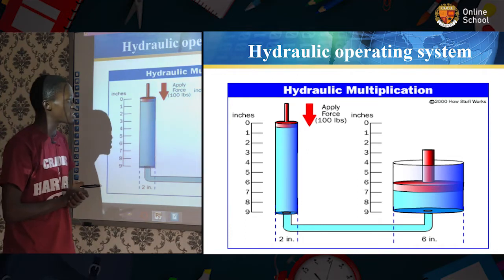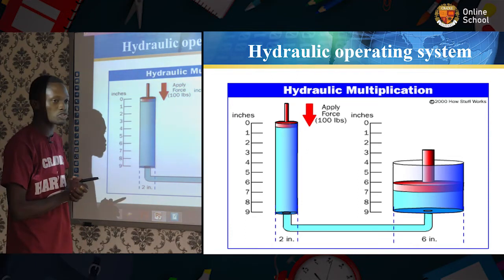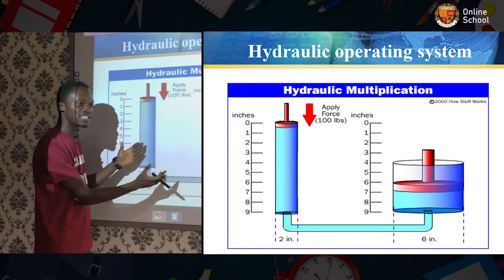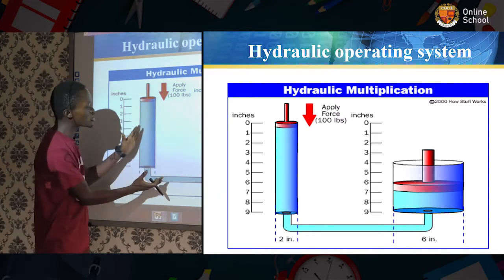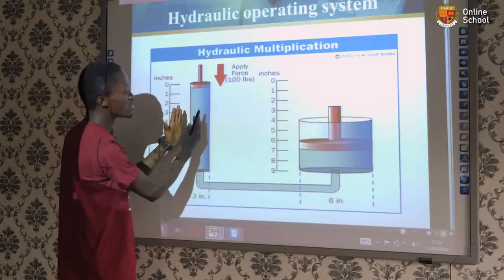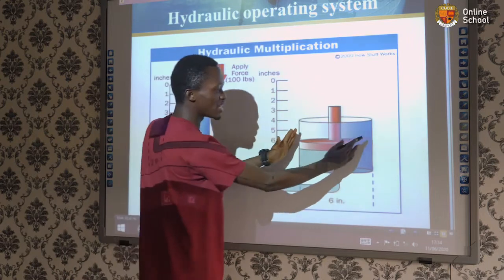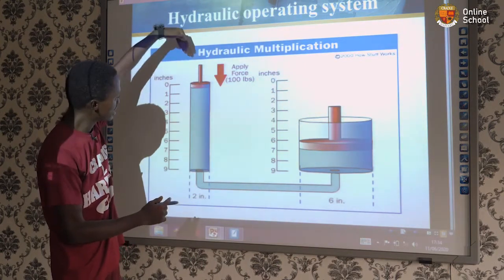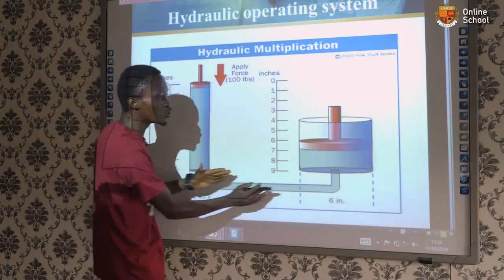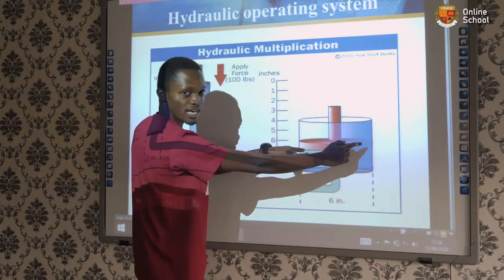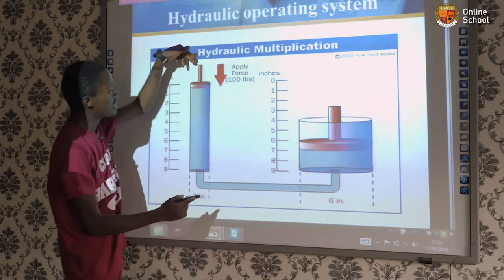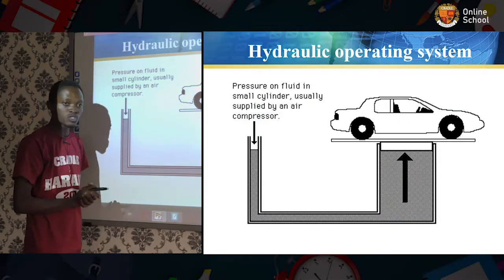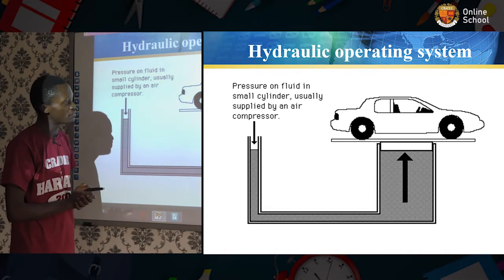Hydraulic operation system — a brief explanation. The hydraulic operation system works in such a way that the fluid in it is compressed, and the compression involves two chambers: the smaller one and the larger one, which is the cylinder. The push of the rod down the smaller cylinder forces the fluid to push the rod on the bigger cylinder, putting force and lifting the weight. An example is a hydraulic jack lifting a car.